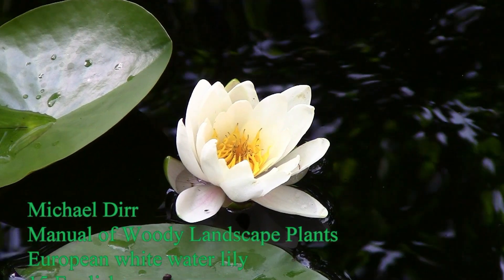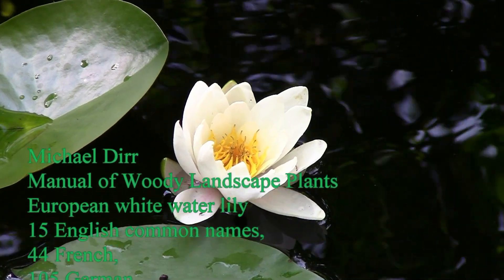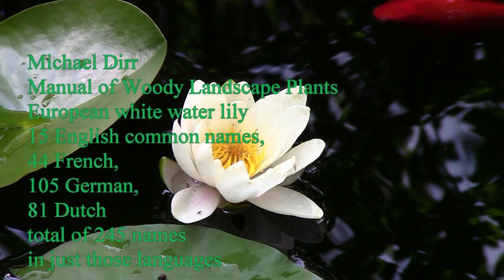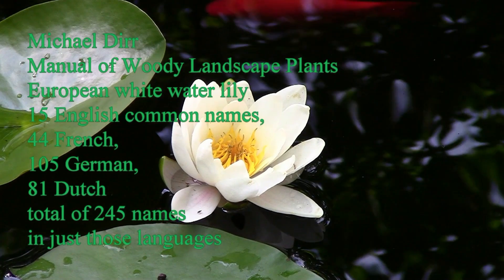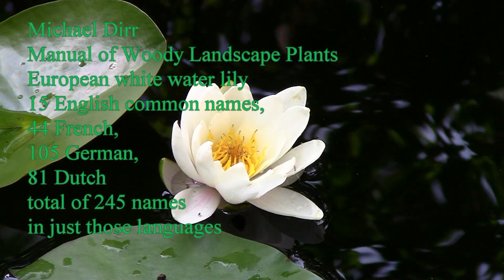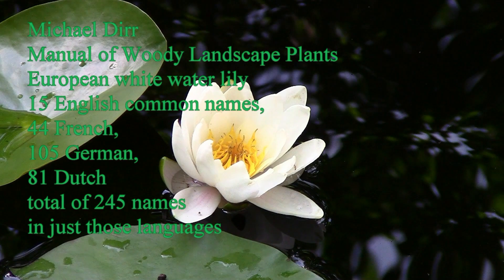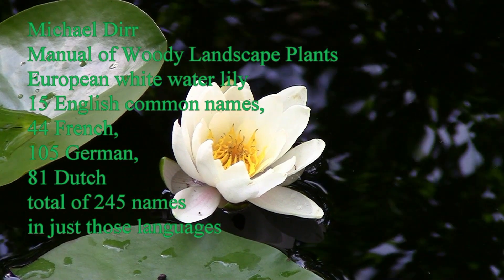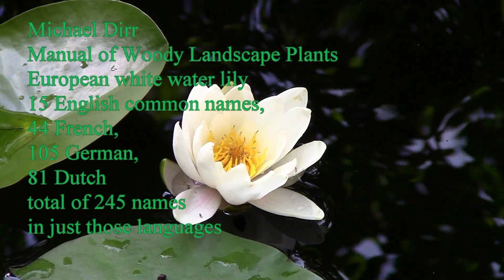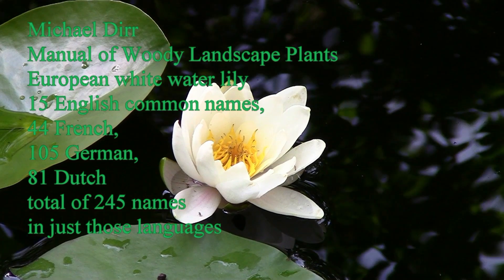According to Michael Durer in his Manual for Woody Landscape Plants, the European White Water Lily has 15 English common names, 44 French, 105 German, and 81 Dutch, for a total of 245 names in just those languages.